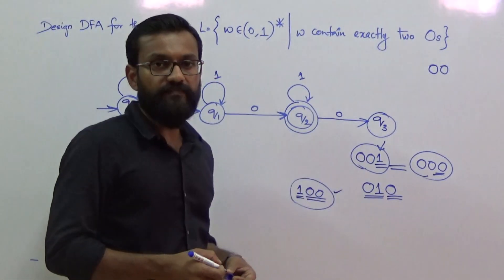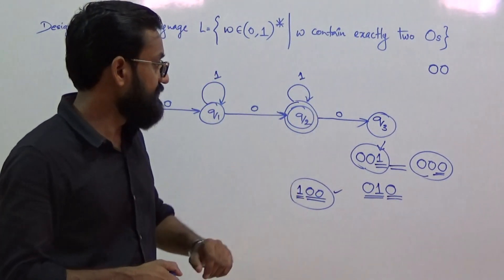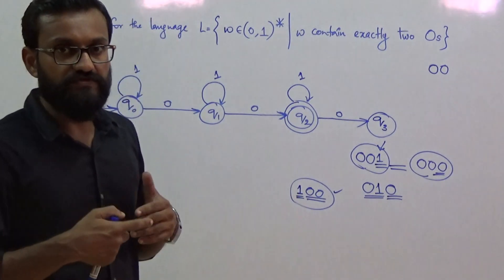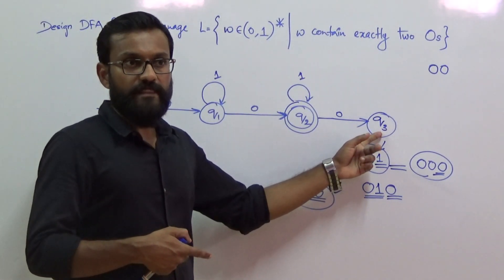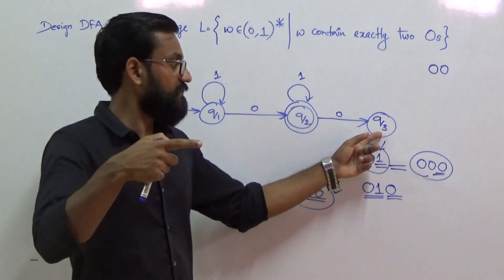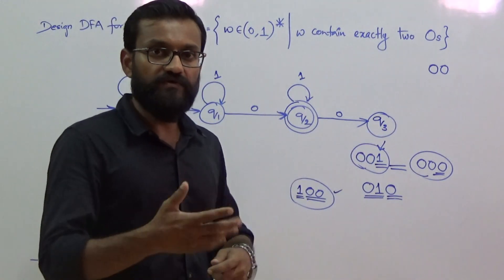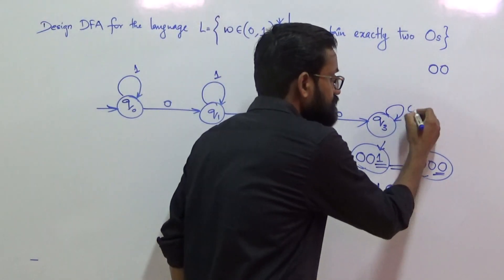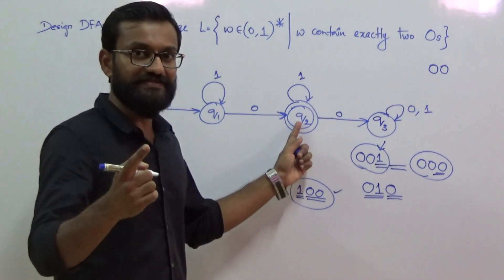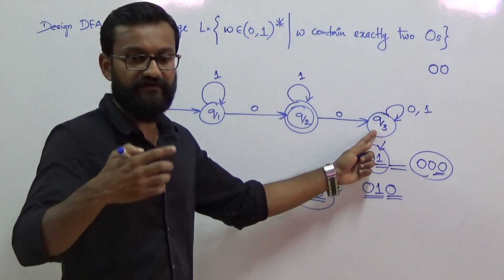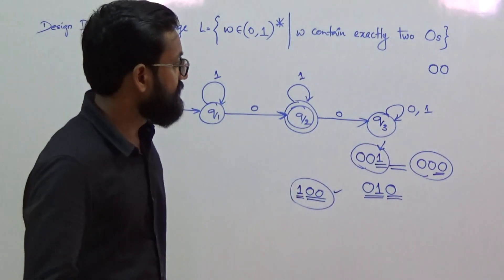Now consider state q3 — we need to apply both 0 and 1 transitions. Whenever the machine consumes more than two 0s, on the third 0 it goes to q3. All such strings are invariant. So once the machine reaches q3, whatever the remaining input — 0 or 1 — it just remains in q3, because any further input still leads to an invariant string.